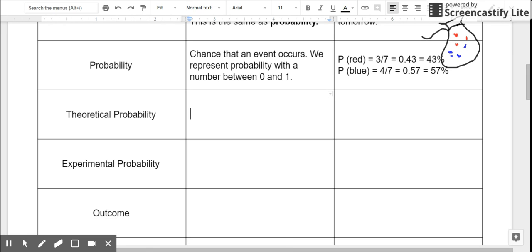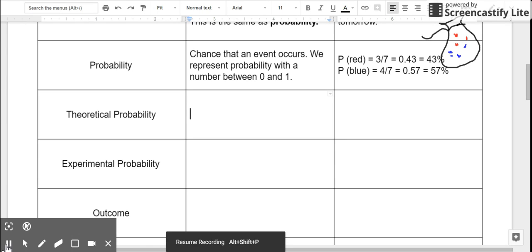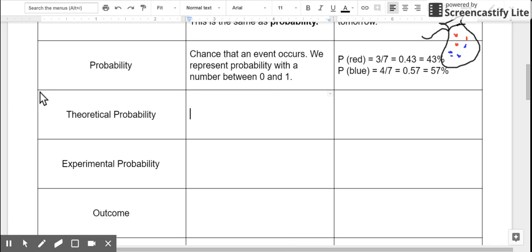Theoretical probability is the probability that something occurs based on just looking at the likelihood of something happening. So that's kind of a vague definition. More specifically, the theoretical probability is the number of favorable outcomes divided by total number of possible outcomes.